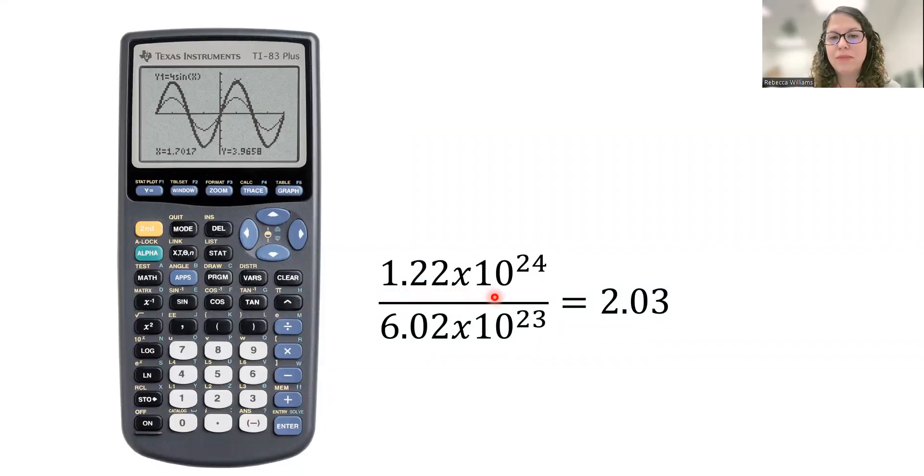1.22 times 10 to the 24th divided by 6.02 times 10 to the 23rd. When you do that, your calculator does the numerator correctly and then it divides by 6.02 and then it multiplies by 10 to the 23rd.